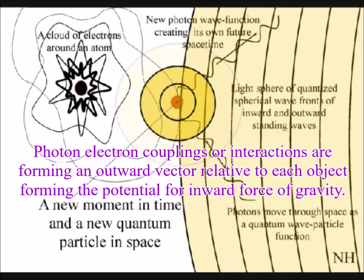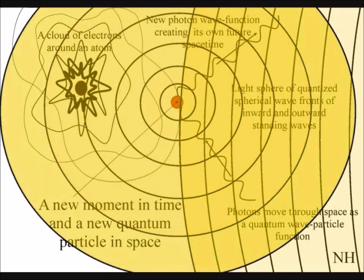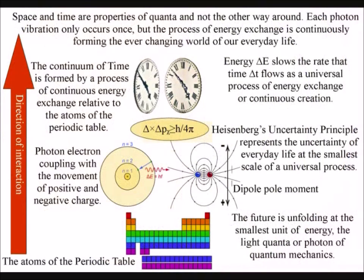This can be explained by light photon energy continuously transforming potential energy into the kinetic energy of matter in the form of electrons.